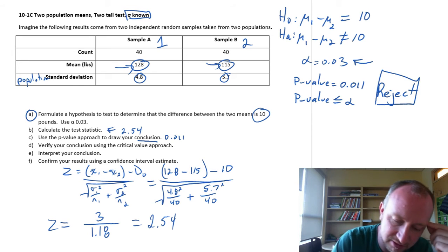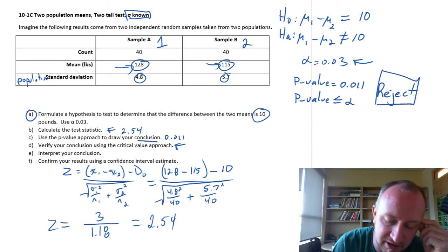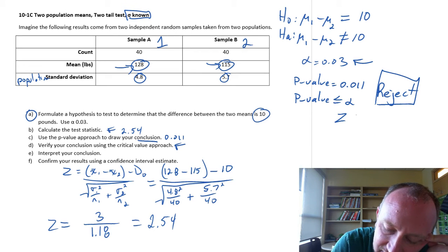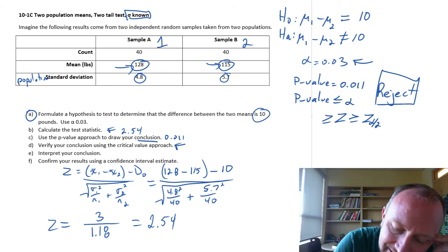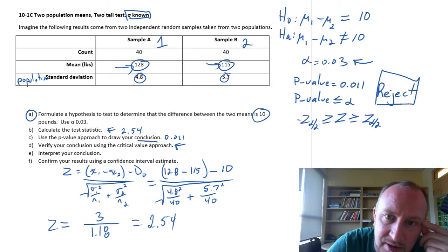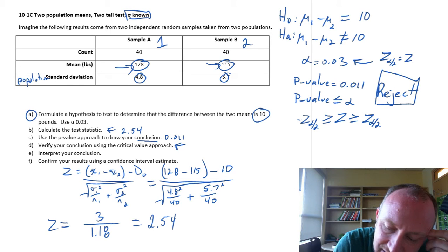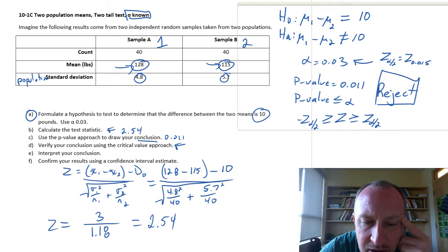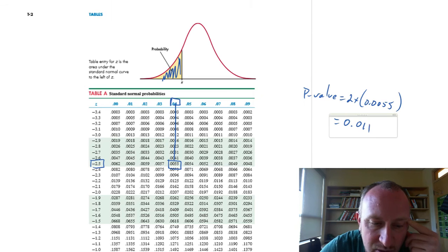Verify the conclusion using the critical value approach. So again, we're going to reject if our test statistic is greater than or equal to the positive z alpha by 2, or less than or equal to the negative z alpha by 2. Alpha is 0.03. So z alpha divided by 2 is going to be z for 0.015.